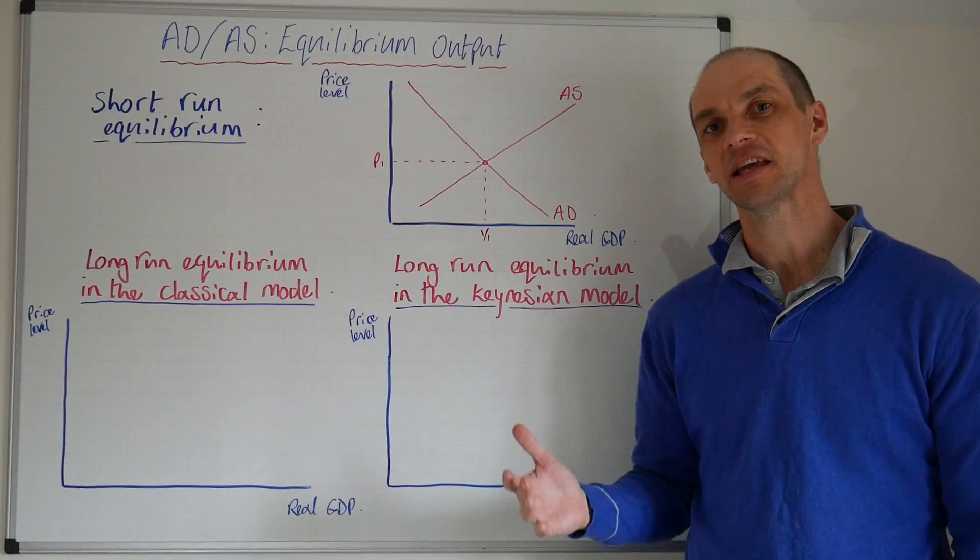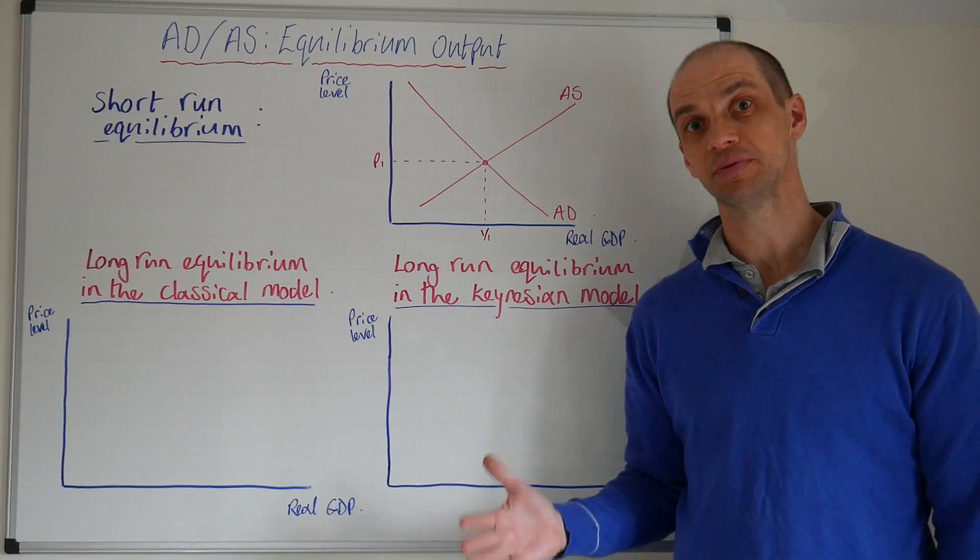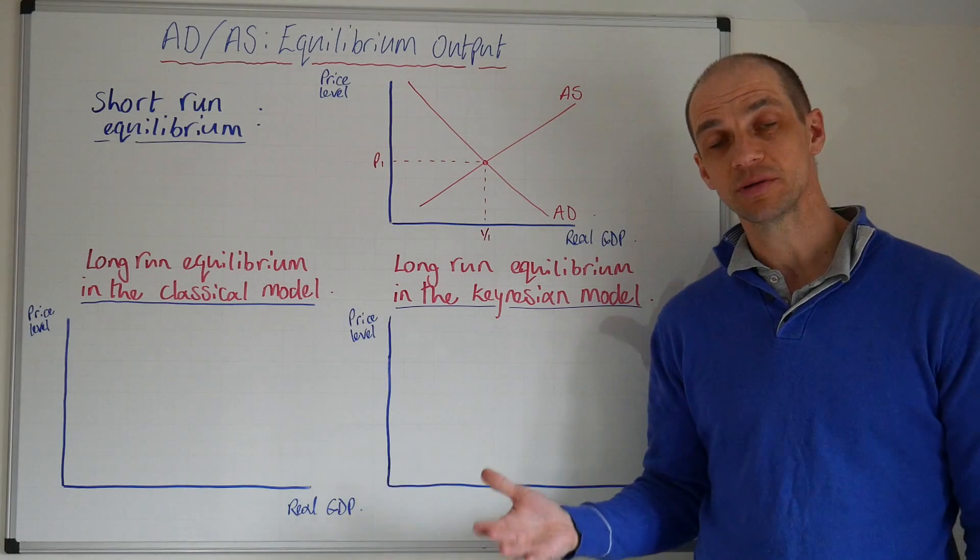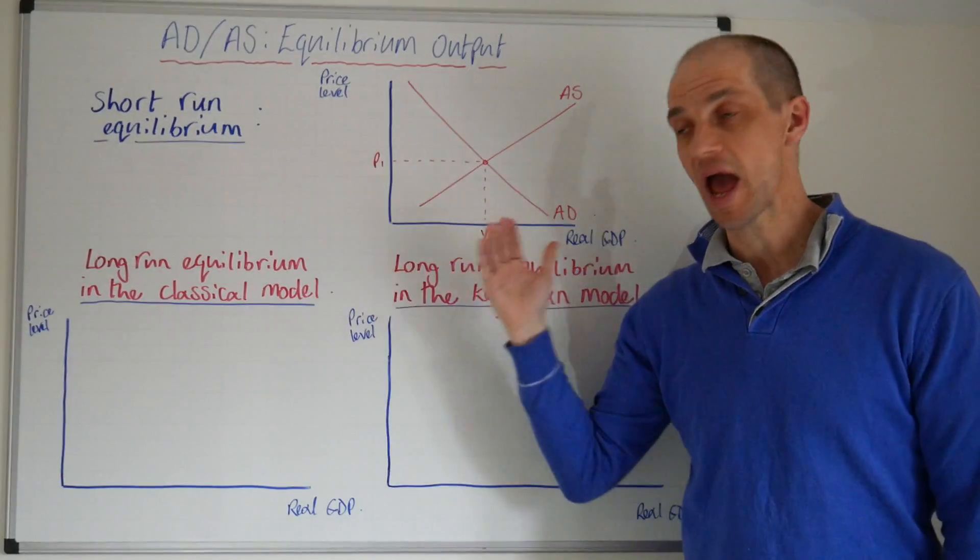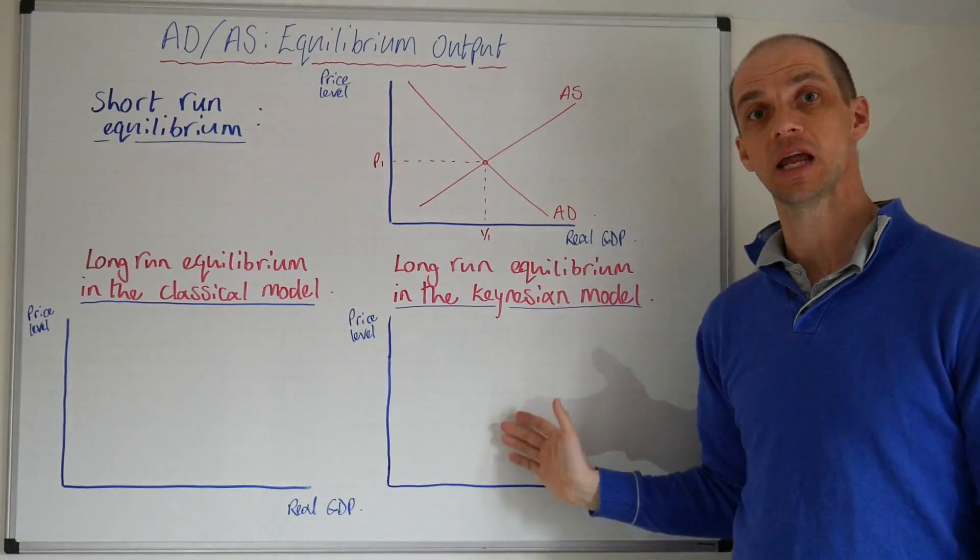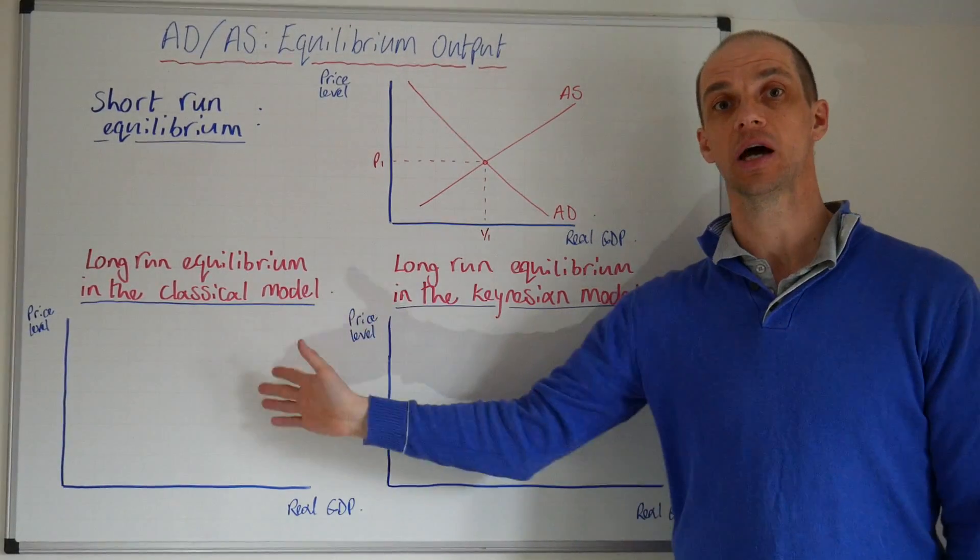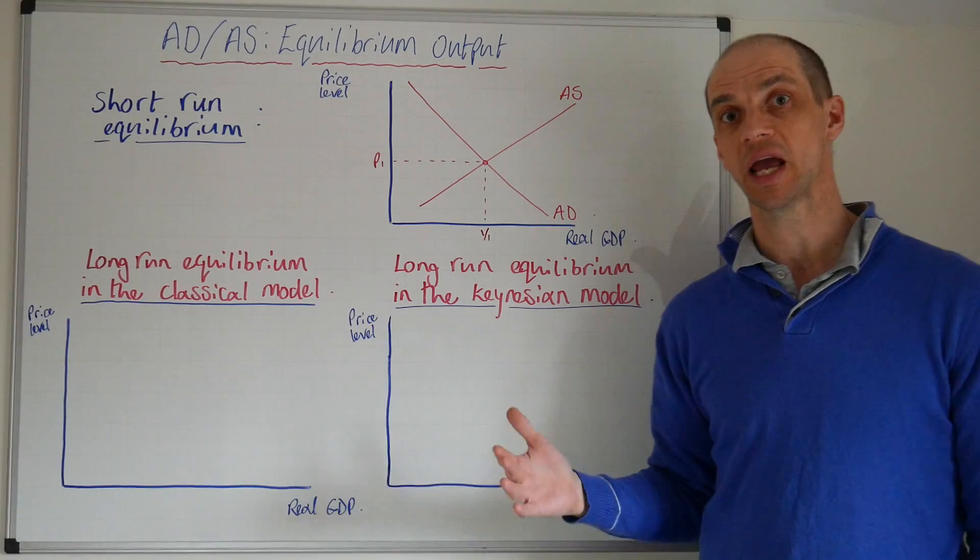Hi everyone, now let's take a look at the equilibrium output position for aggregate demand and aggregate supply in the short run as well as the long run in both of these different interpretations of the LRAS curve.